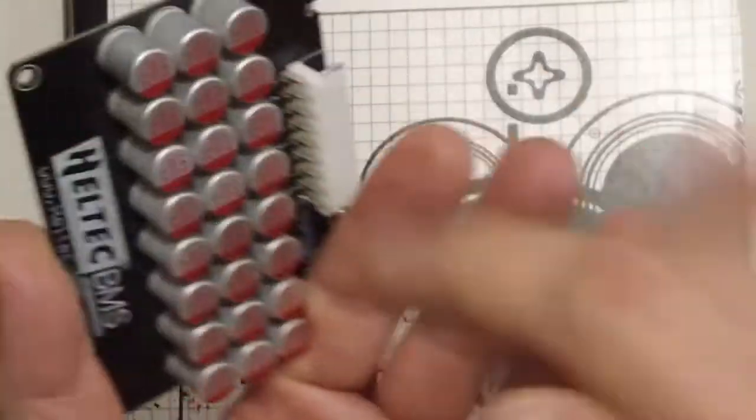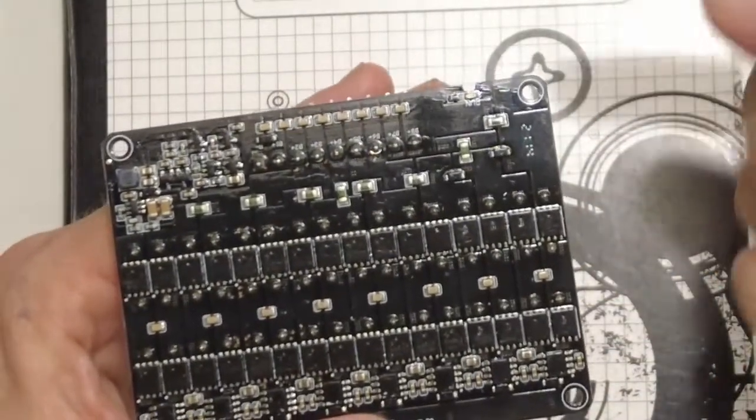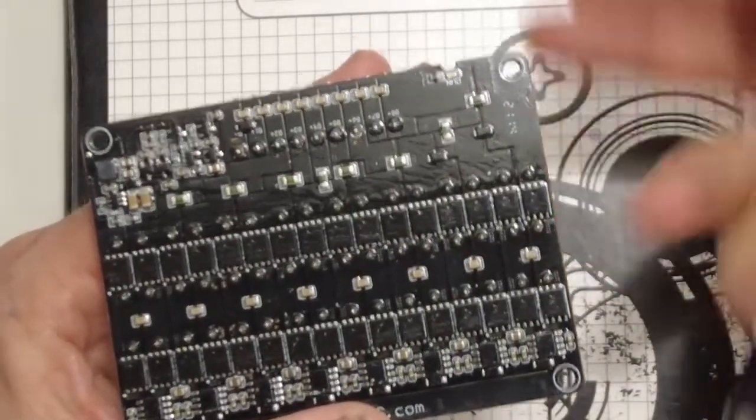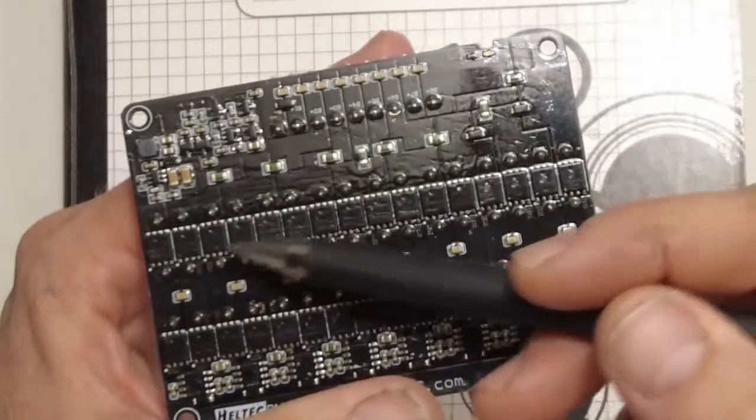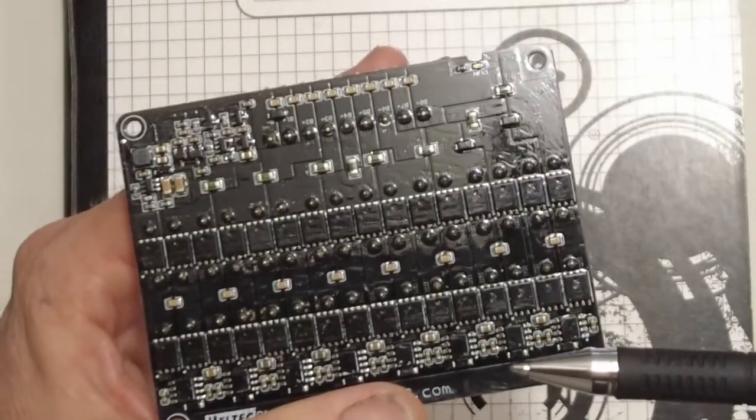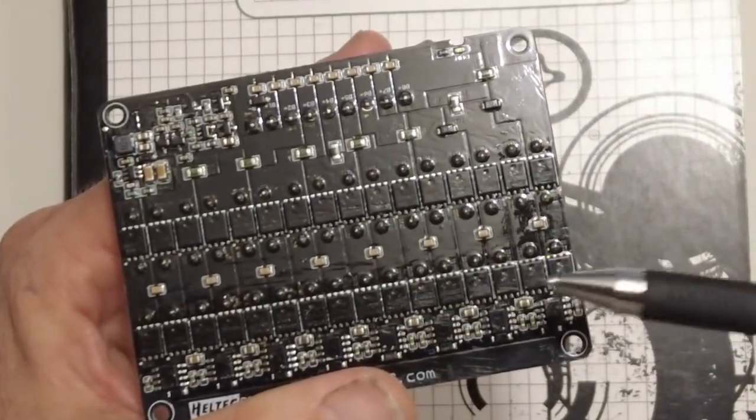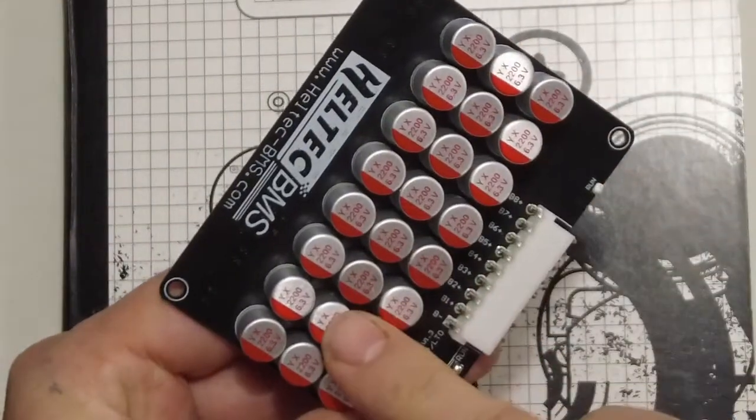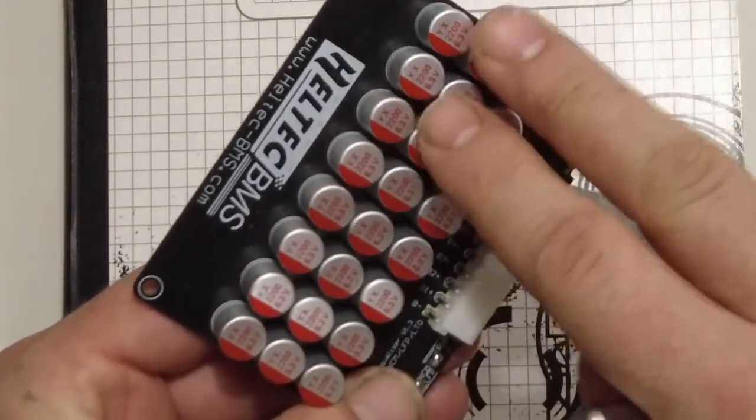So each one of these capacitor banks will mirror the voltage that your cells are currently at. They will charge up to that level of voltage. Then the series MOSFETs switch off and then the parallel MOSFETs switch on. These put all these capacitors in parallel and equalize the voltages amongst all of them.